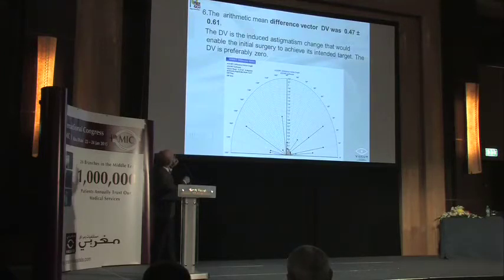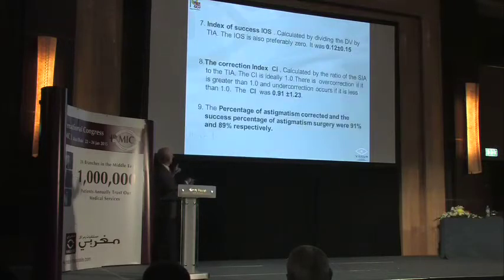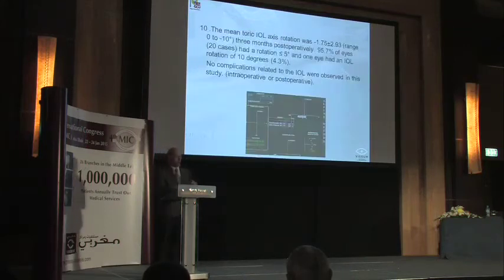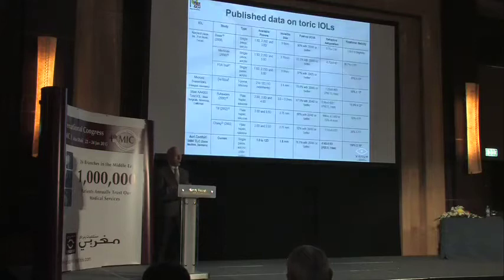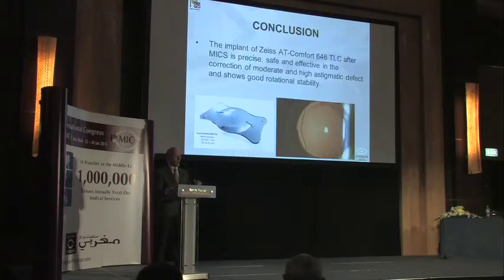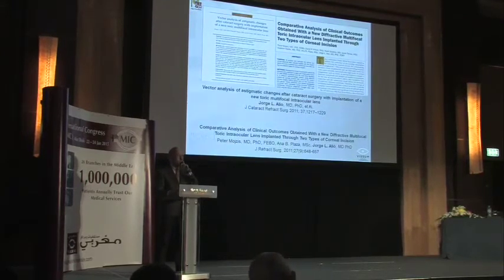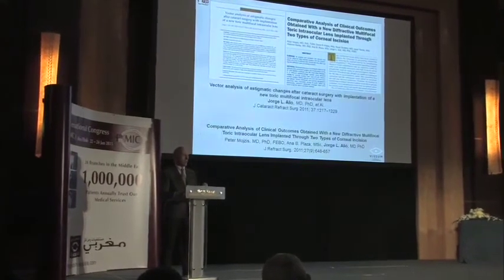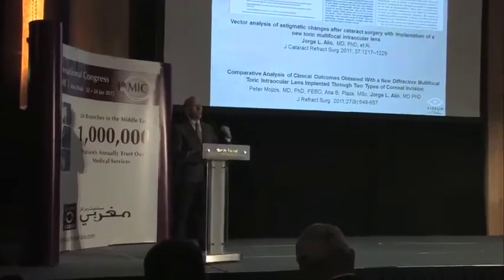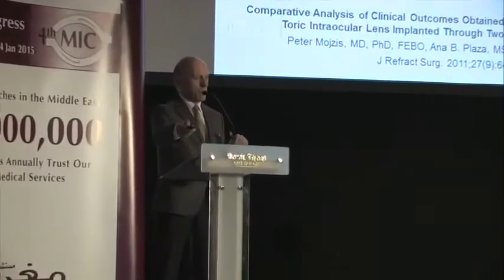We have a difference vector of 0.47, less than 1 degree, a correction index of 0.91, and the percent of success as mentioned was 89%. This is one of our lenses of choice for the reasons I mentioned — published results show it matches or surpasses others based on evidence. We reproduced the same results with a toric bifocal and trifocal model — the trifocal Size lens — with outcomes identical to the monofocal toric.